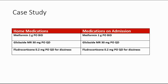Home medications include Metformin 1 gram orally twice daily, Gliclazide MR 30 mg orally once daily, and Fludrocortisone 0.2 mg orally daily for dizziness. Home medications were continued upon admission.